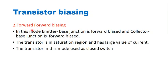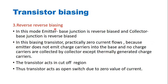In forward-forward biasing, both the emitter-base junction and the collector-base junction are forward biased. The transistor operates in the saturation region. A large value of current flows in this mode, and because of this the transistor acts as a closed switch.